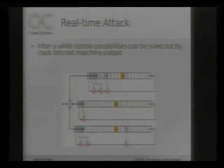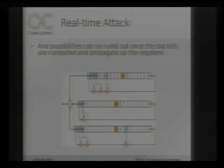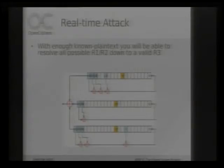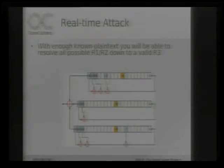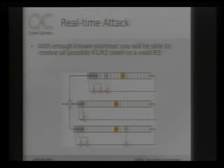It's essentially just using parity to figure out logically which possibilities work and which ones don't. So with enough known plaintext, you'd be able to resolve all possible R1 and R2 pairs down to a valid R3 register. Since you only have to brute force R1 and R2, it reduces it down to a 41-bit problem instead of the full 64-bit. So it's a pretty big shortcut.